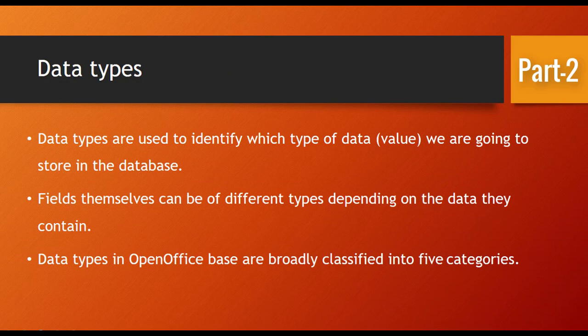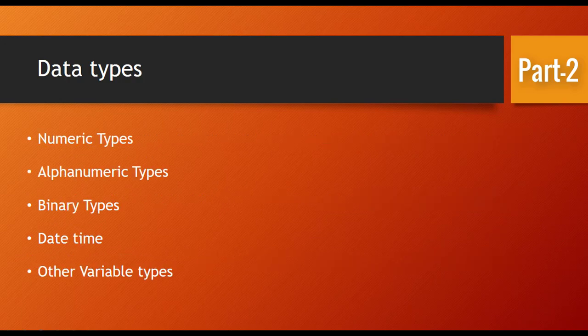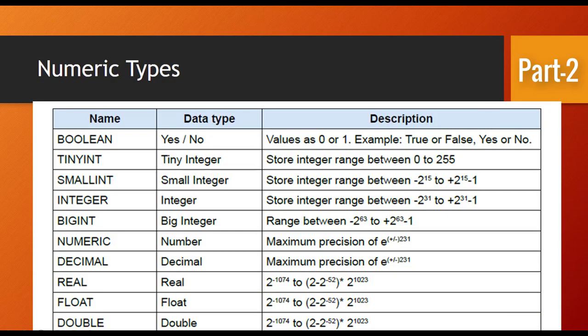Let's talk about the data types. Data types are used to identify which type of data is added to the columns. The data types, which are given in OpenOffice, are classified into categories with explanation: numeric type, alphanumeric type, binary type, date time and other variable type.